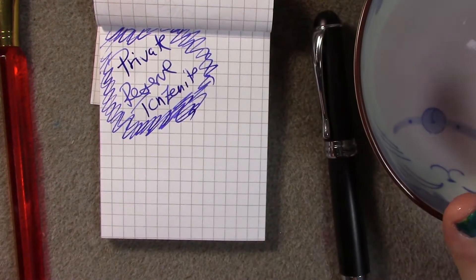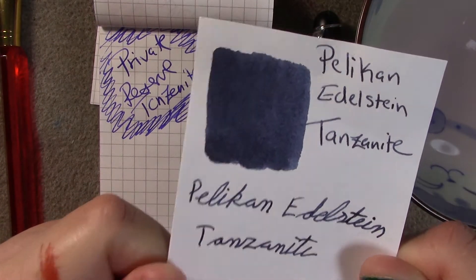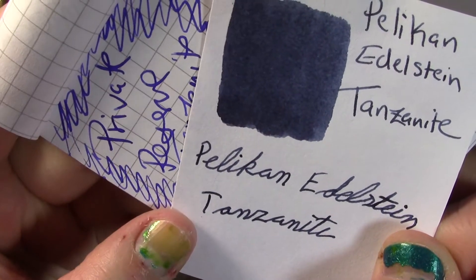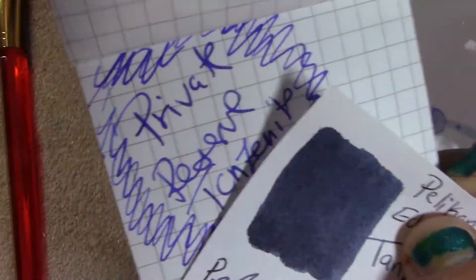This one is Pelican Edelstein's Tanzanite, which is more of a blue-black compared to Private Reserve's Tanzanite, which is more of a deeper purple. Not showing very deep on my camera, it's pretty bright actually. I'll have a hex code of what this actually looks like.